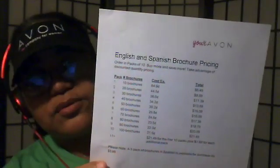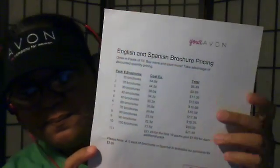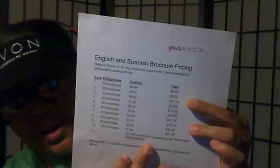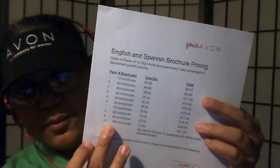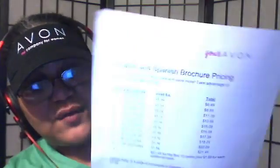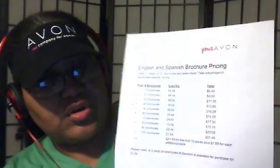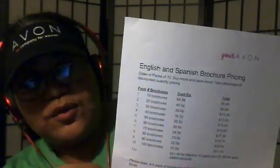Don't put number ten or anything like that. If you put ten, this is what you're gonna get — look at the bottom: if you click ten you're gonna end up with a hundred brochures, a hundred books, for twenty-one dollars and forty-nine cents. So make sure you guys know how to read your brochures.